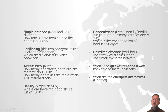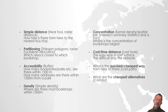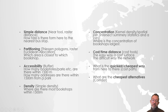Then we will talk about accessibility — basically how many bookshops are within 1500 meters, or how many stations or addresses are within 1500 meters of a station. We'll cover these different concepts of accessibility using the buffer tool.